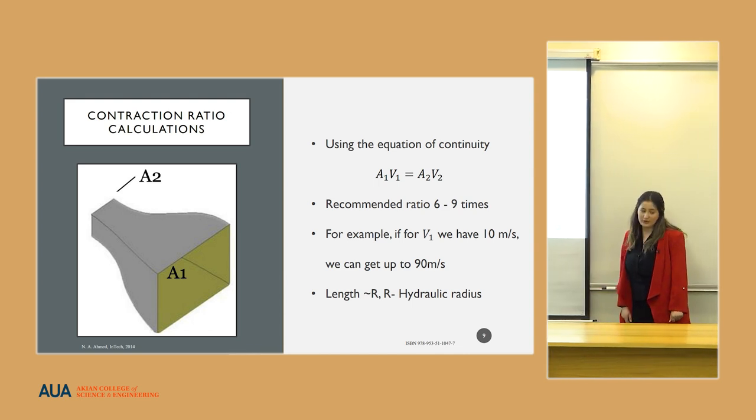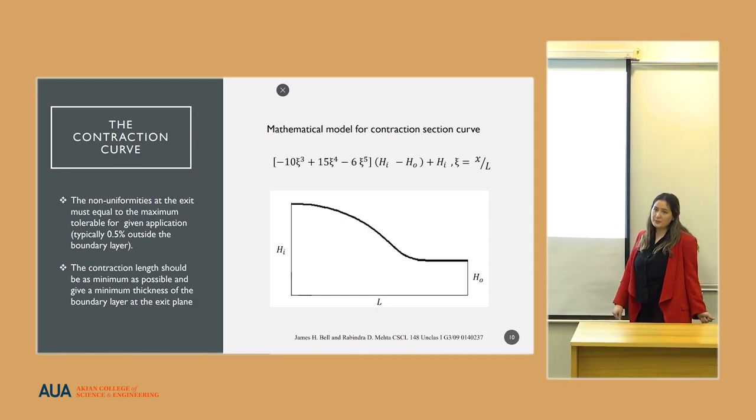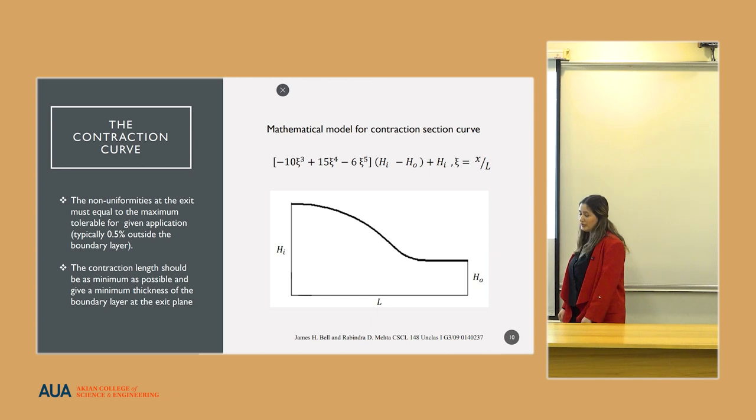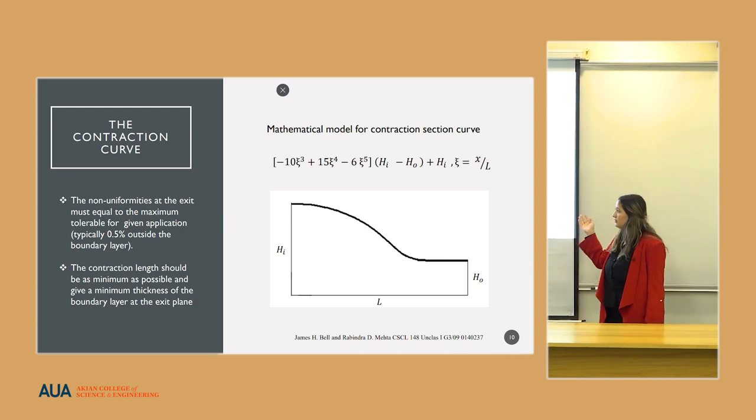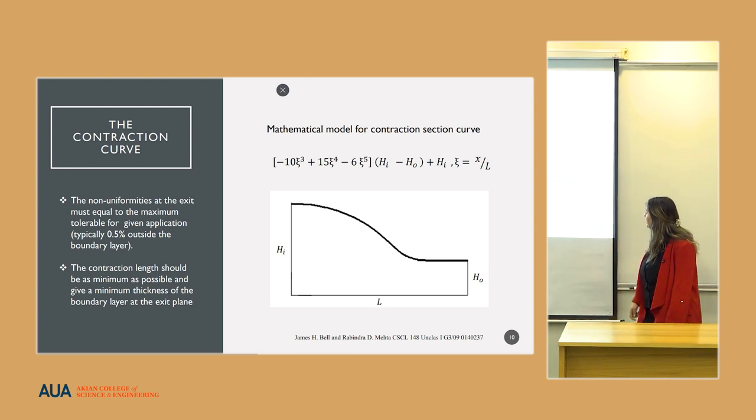As for the length, it should be around the hydraulic radius. For the curve of the contraction section, there are some conditions that it has to meet. First, the non-uniform width exiting of the contraction section has to be around 0.25% of the boundary layer, and its length has to be as minimal as possible and give us minimal boundary layer thickness. Several equations were taken, and this is the order equation that met these conditions. It was done by James H., and its parameters are described in the figure.